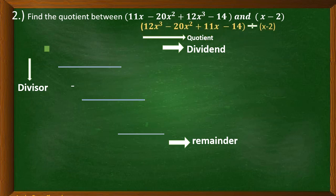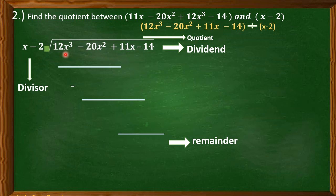Starting with the term with the highest degree: 12x cubed will be first, followed by negative 20x squared, then positive 11x, and lastly negative 14. The divisor x minus 2 is already in standard form. Now we write the dividend 12x cubed minus 20x squared plus 11x minus 14 inside the long division symbol, and x minus 2 outside.